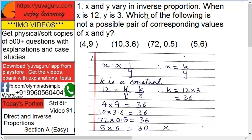So what we have to do is, whenever you get any inverse proportion or direct proportion problem, the important part is you have to find a constant k. Now what is constant k?